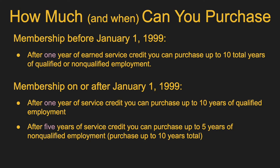How much and when you can purchase varies based on your membership date. If your membership date is before January 1st, 1999, you only need one year of earned service credit before you can purchase, and you can purchase up to 10 total years of qualified or non-qualified employment in any combination. If your membership is on or after January 1st, 1999, after one year of service credit you can purchase up to 10 years of qualified employment. But you can't purchase non-qualified employment until you have five years of earned service credit, and you can only purchase up to five years of non-qualified. You can still purchase up to 10 years total.